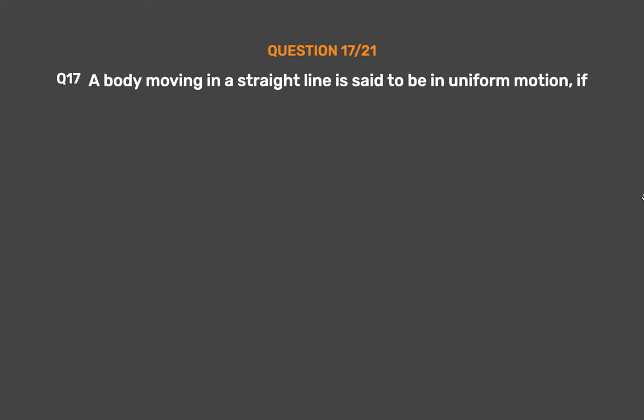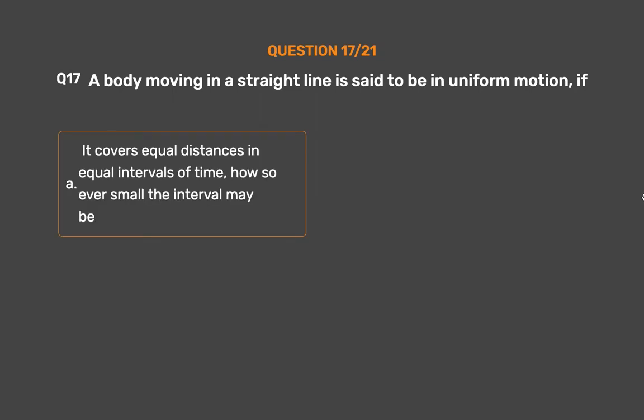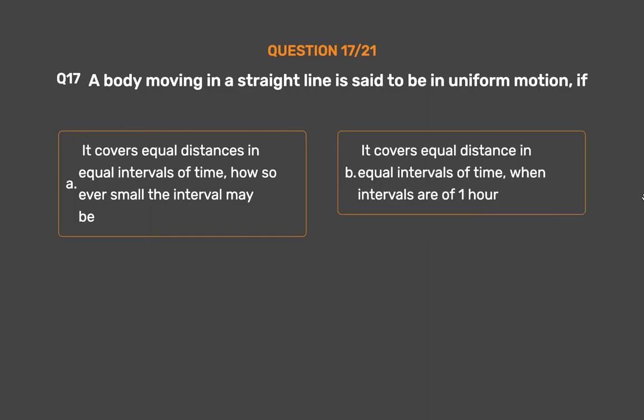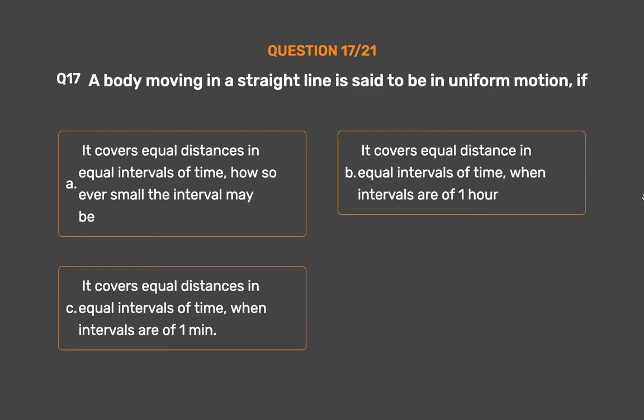Question No. 17. A body moving in a straight line is said to be in uniform motion if: Option A: It covers equal distances in equal intervals of time, howsoever small the interval may be. Option B: It covers equal distances in equal intervals of time, when intervals are of one hour. Option C: It covers equal distances in equal intervals of time, when intervals are of one minute. Option D: None of the above is correct.